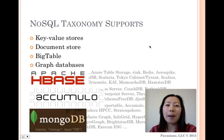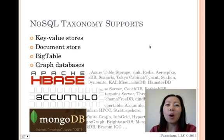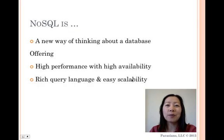Another well-known one, MongoDB, uses a document model, which can be thought of as a row in RDBMS. Why NoSQL? It's high performance with high availability and offers rich query language and easy scalability.